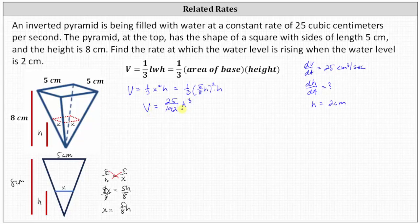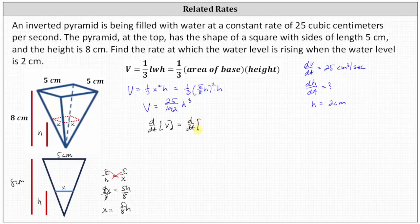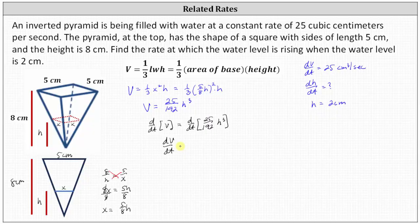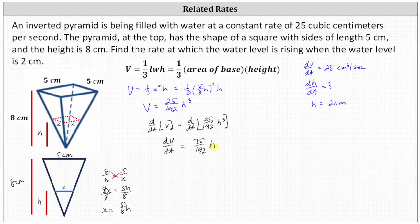Now that we have the volume v in terms of h, we differentiate both sides with respect to t. The derivative of v with respect to t is dV/dt. On the right, differentiating twenty-five over one hundred ninety-two times h cubed with respect to t requires the chain rule. We first differentiate with respect to h, multiplying by three to get seventy-five over one hundred ninety-two times h squared, and then multiply by dh/dt.